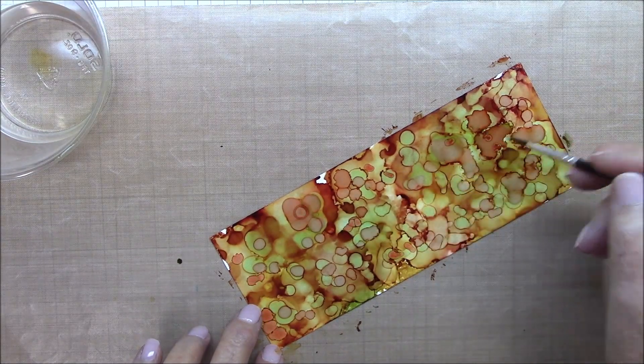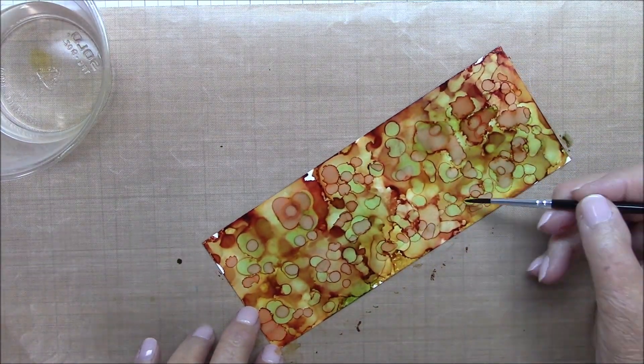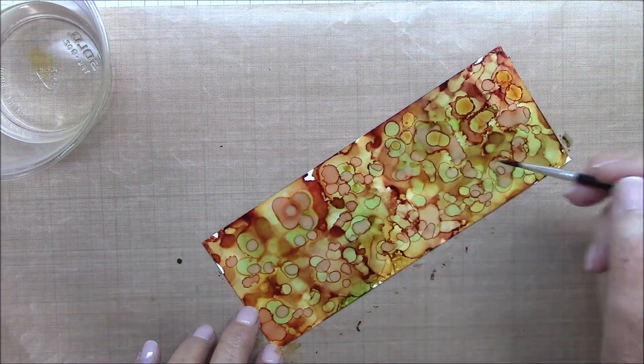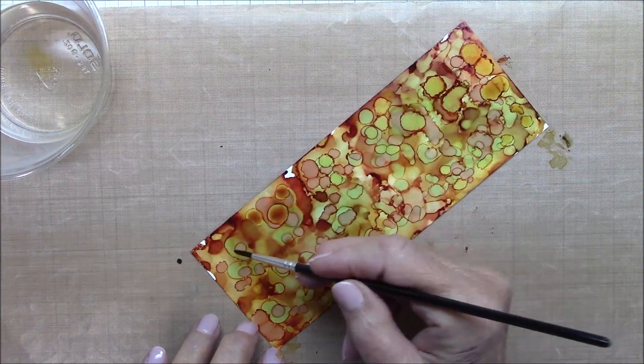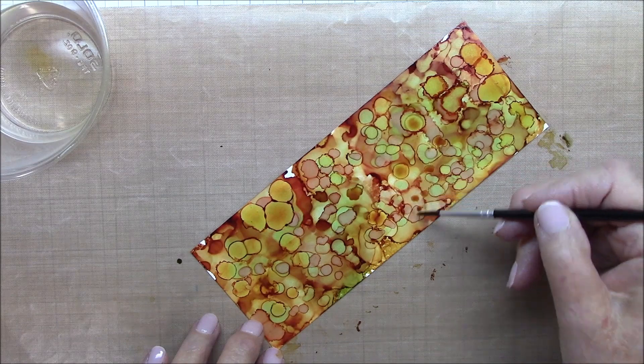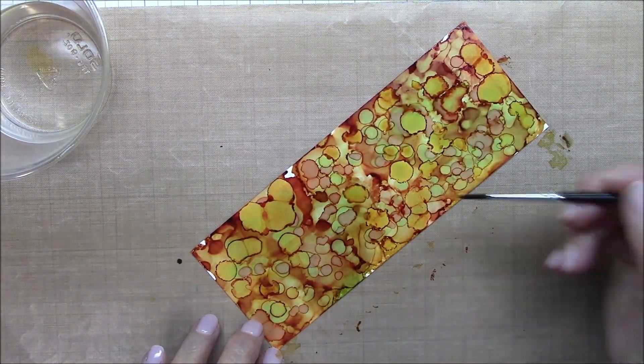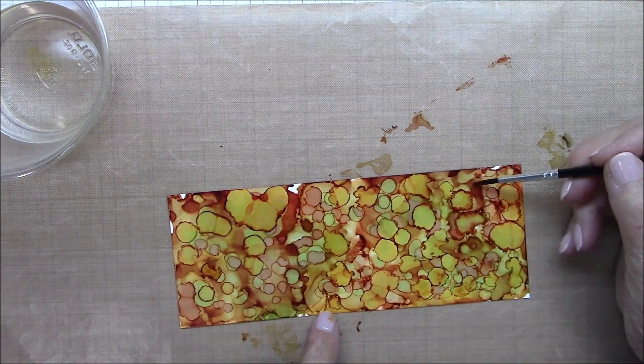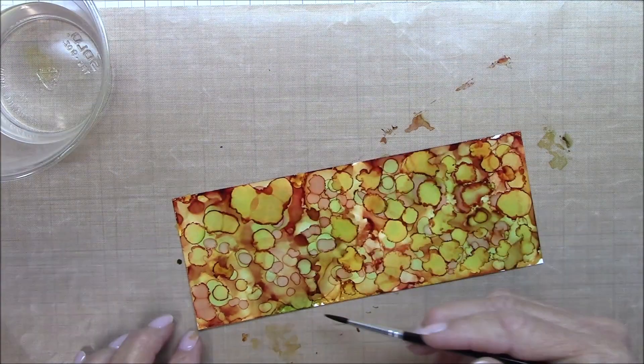So you will see as it moves along that that sort of evolves. I will add the other two colors, the terracotta and the butterscotch, alternately with the green, and wherever I think I need another color I'll just add it in.